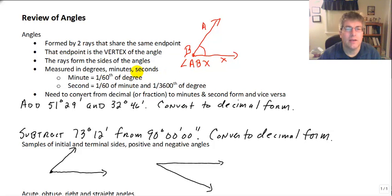We measure angles in degrees, minutes, and seconds. This is just a matter of precision. A minute is 1/60th of a degree, so 60 minutes make up one degree. And 60 seconds make up one minute, so 3,600 seconds make up one degree. You may need to convert degrees from decimal or fraction form into minutes and seconds or vice versa.